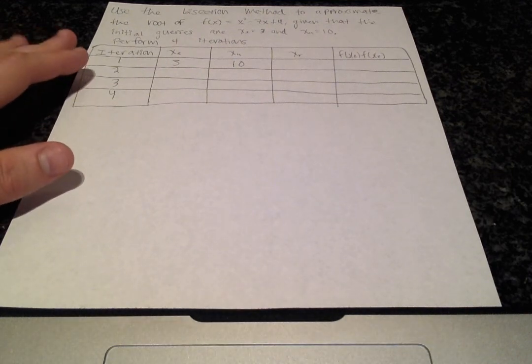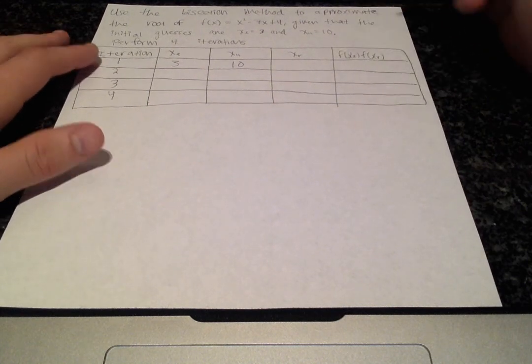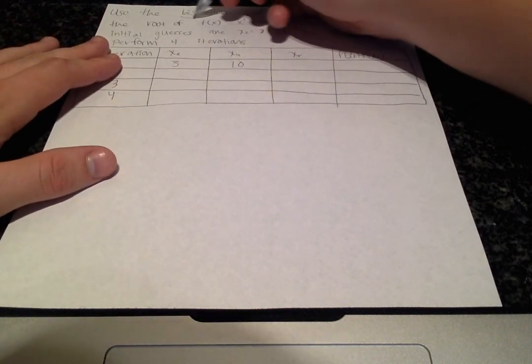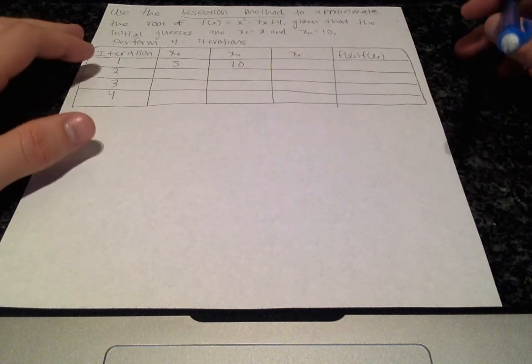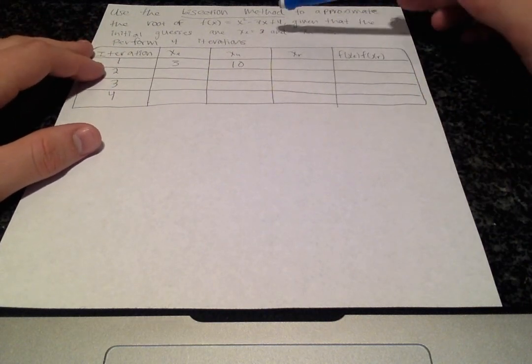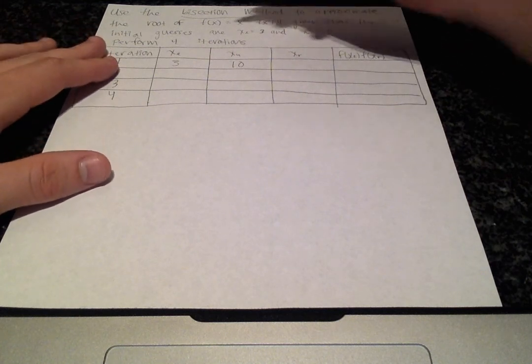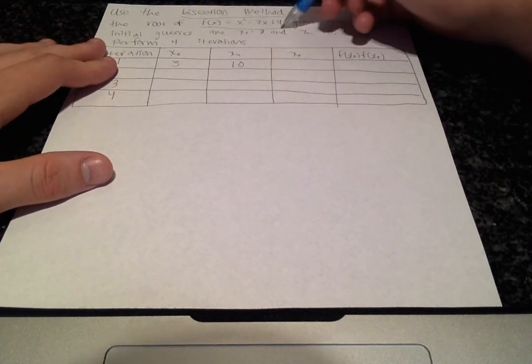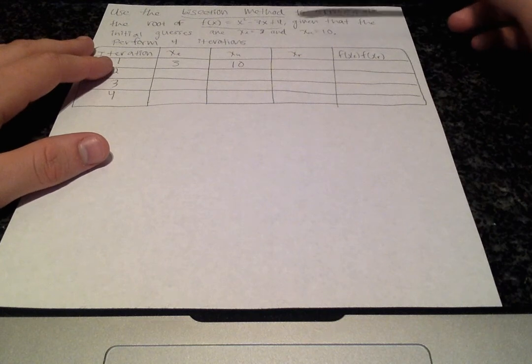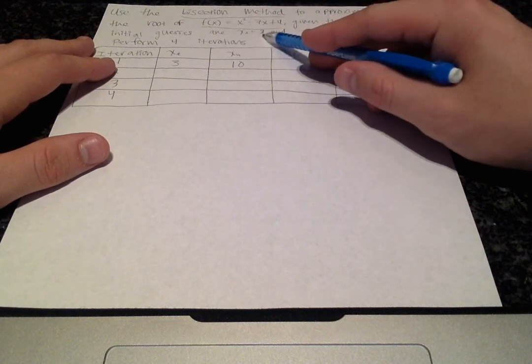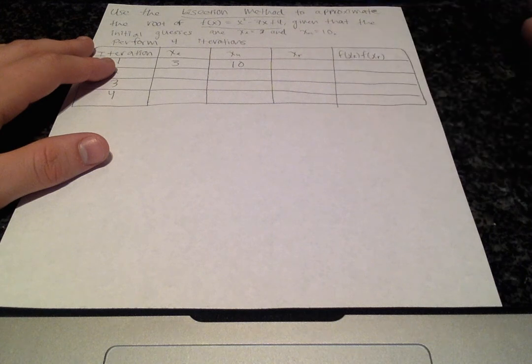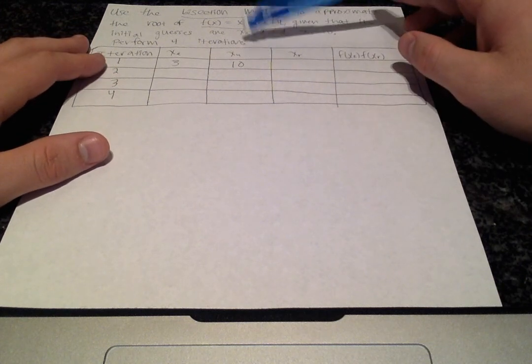The topic we're looking at today is the bisection method. We want to approximate the root of the function x squared minus 7x plus 4. We're also given initial guesses, x lower limit of 3 and the upper limit of 10, and we're going to perform 4 iterations.